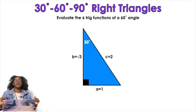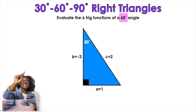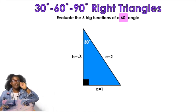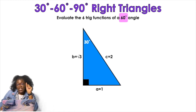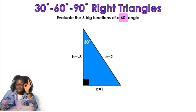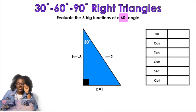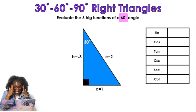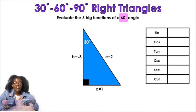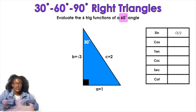This is my triangle. We want to evaluate the six trig functions of the 60-degree angle. Even though the 30-degree label is at the top, we're actually looking at the bottom unlabeled angle, which is the 60-degree angle. Using SOH: sine is opposite over hypotenuse. Looking at the 60-degree angle, opposite is square root of 3 and hypotenuse is 2, so sine of 60° equals root 3 over 2.